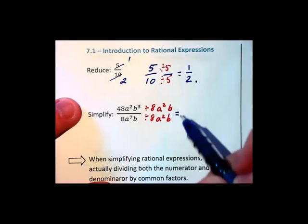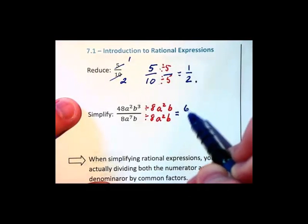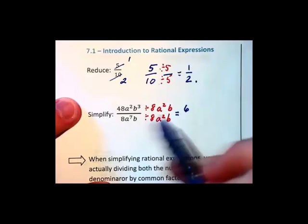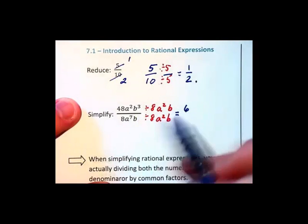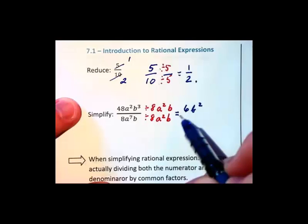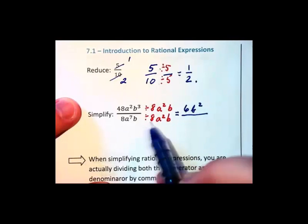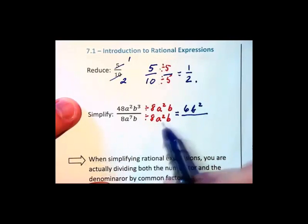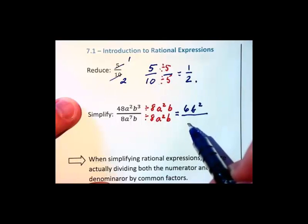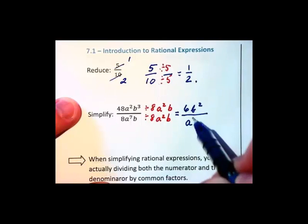48 divided by 8 gives us 6 in the numerator. a² divided by a², they're all gone. b³ divided by b gives us b². Down below, 8 divided by 8, they're gone. a⁷ divided by a² gives us a⁵.